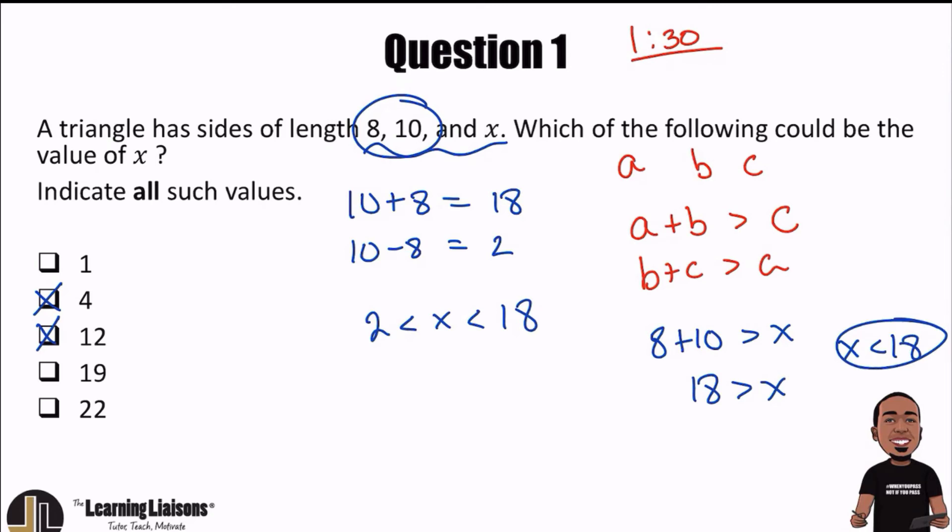And then the other way, assuming that 10 is the biggest side, we would say 8 plus X is greater than 10. By subtracting 8 on both sides, we would get X is greater than 2.